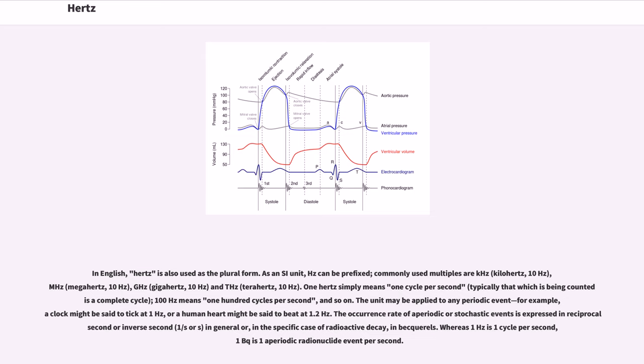The occurrence rate of aperiodic or stochastic events is expressed in reciprocal second or inverse second (1/s or s⁻¹) in general, or in the specific case of radioactive decay, in Becquerels. Whereas 1 hertz is 1 cycle per second, 1 Becquerel is 1 aperiodic radionuclide event per second.